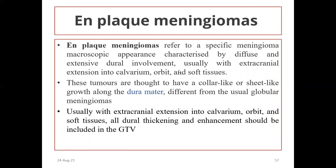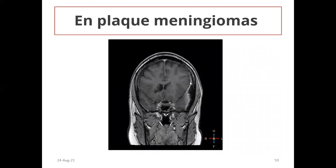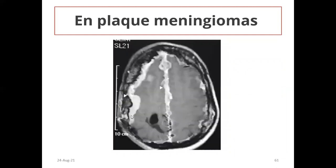There is a concept called en plaque meningiomas. En plaque meningiomas refer to a specific meningioma macroscopic appearance characterized by diffuse extensive dural involvement, usually with extra-cranial extension to the calvarium, orbit, and sub-temporal fossa. These tumors are thought to have a carpet-like, seed-like growth in the dura mater, different from the usual globular meningiomas. All dural thickening and enhancement should be included in the GTV for en plaque meningiomas.